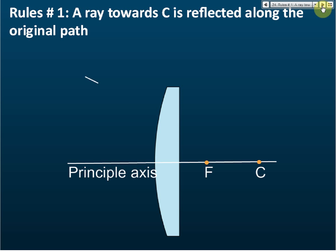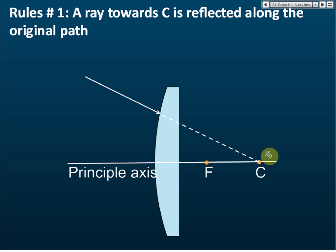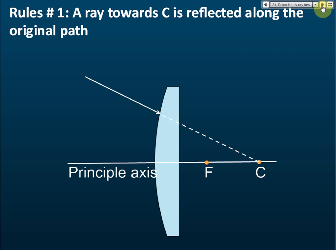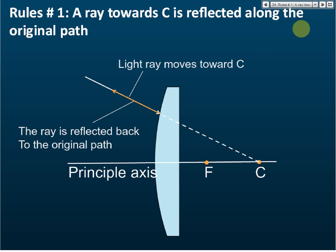The light ray only reaches here, so the dashed line is just a reference line to show that it moves heading towards C. The solid line shows the actual path of the light ray, while the dashed line is just a reference line. The ray moves towards C and is then reflected back.